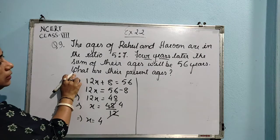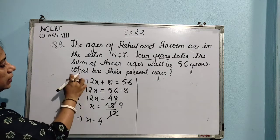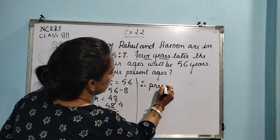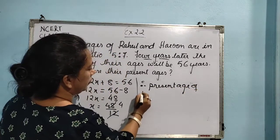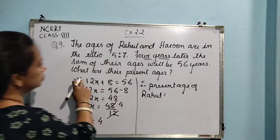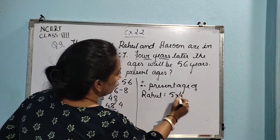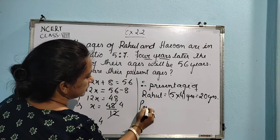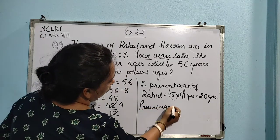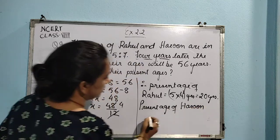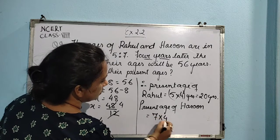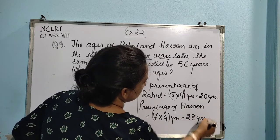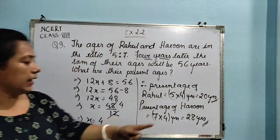We have got the value of x. Now we need to find the present ages. Present age of Rahul is equal to 5x, that means 5 into 4, which is 20 years. Present age of Haroon is equal to 7x, that is 7 into 4, which equals 28 years.